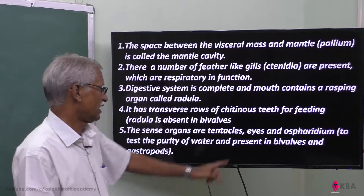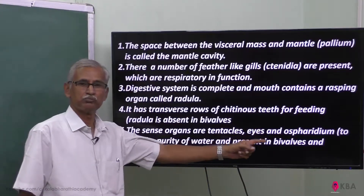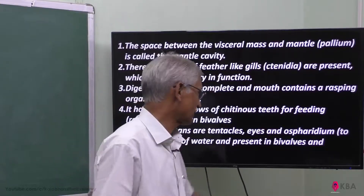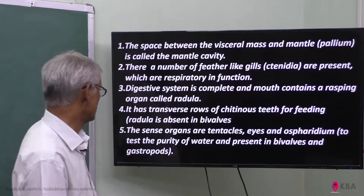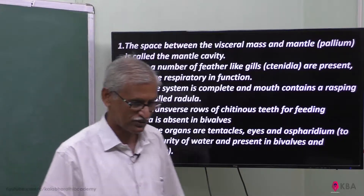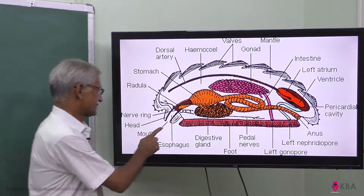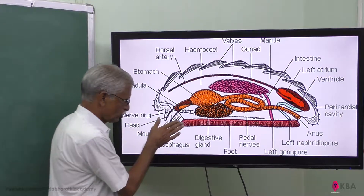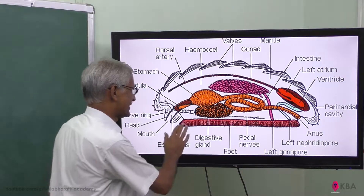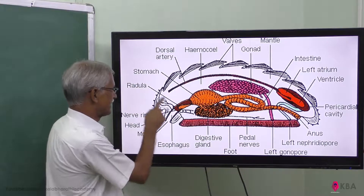In other species the radula has chitinous teeth. The sense organs include tentacles, eyes, and osphadium. The osphadium is present in bivalves and gastropods. There is a muscular foot, and in the mouth region there is a radula structure.